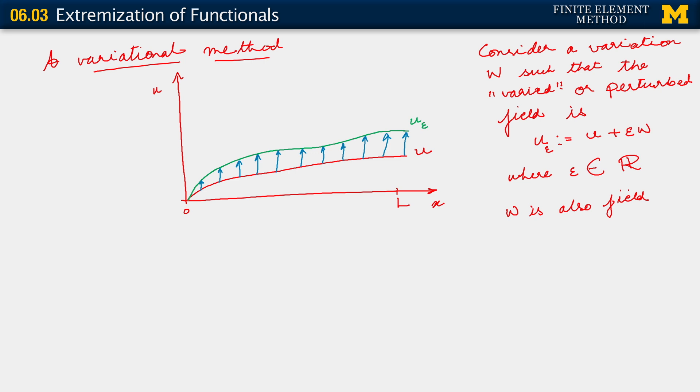If you stare at this figure I've drawn here, the graph, you should be able to see that the blue arrows essentially represent the field epsilon w. It varies something like that, gets a little smaller here, bigger again. This is epsilon times w. Now, remember, epsilon is a real number. What is that telling you about w?